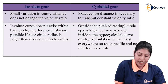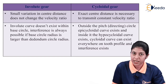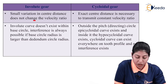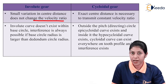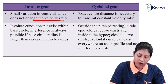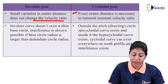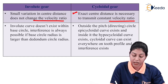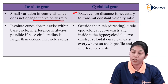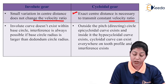In involute gear, a small variation in the center distance of the base circle does not change the velocity ratio — it remains constant for every condition. But in cycloidal gear, an exact or definite center distance is required for a constant velocity ratio. If the center distance is changed, it will affect the velocity ratio, causing variation.